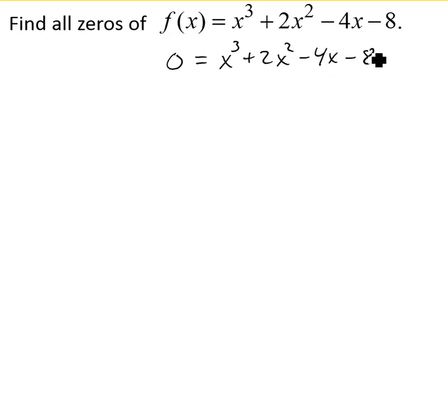We'll solve this by factoring. To solve by factoring we need a zero on one side, which we have. Since we have four terms, we're going to factor by grouping. We'll group these first two terms together and group these last two terms.